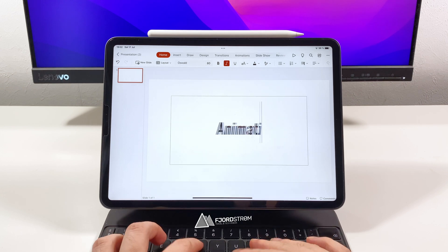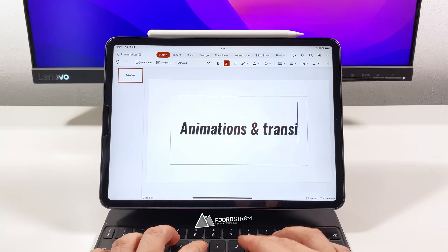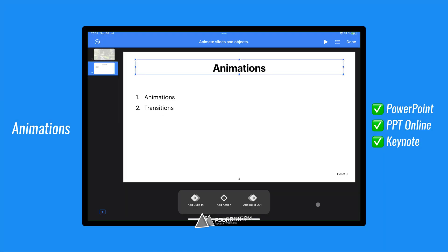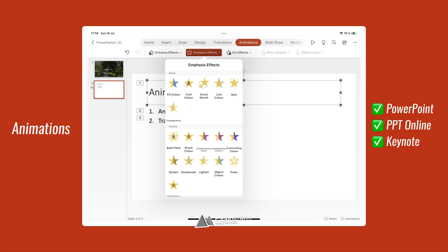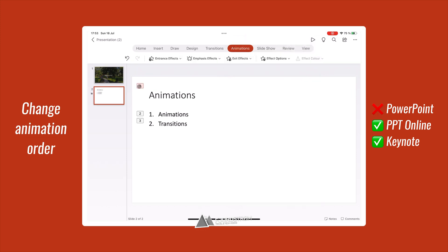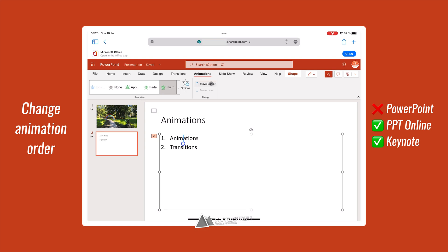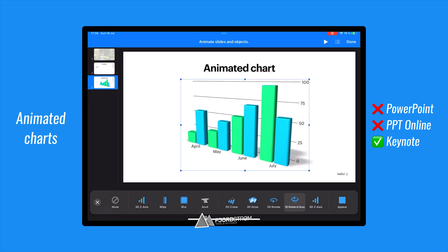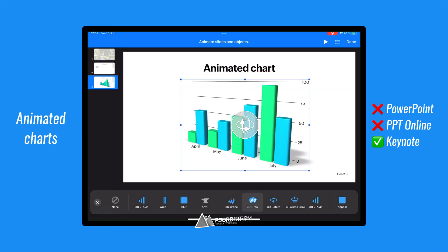Next up are animations and transitions. Obviously both PowerPoint and Keynote support animations. They include entrance, emphasis and exit animations. Some animations in PowerPoint are also customizable. However, there's no way of rearranging the order of animations in the PowerPoint app, but it is possible online. Keynote does it all — you can even change the timing and the duration. Animated charts are really cool in Keynote. If you used Keynote on Mac before, you probably already know that Keynote has some very cool visual effects if you need them.